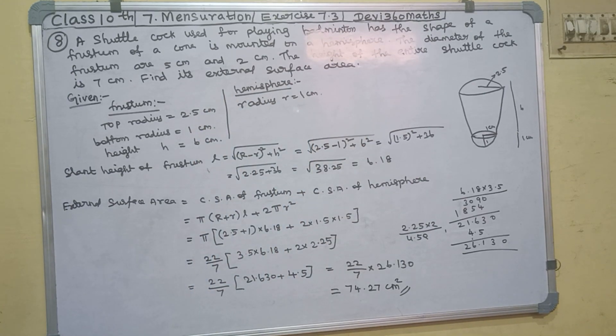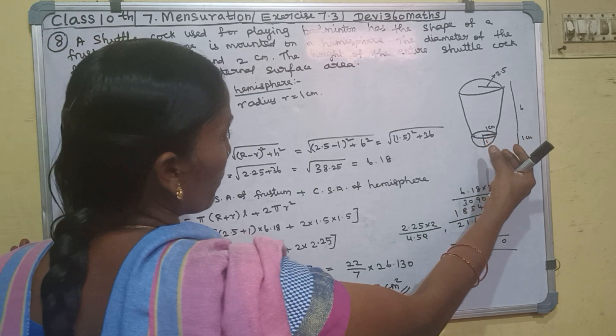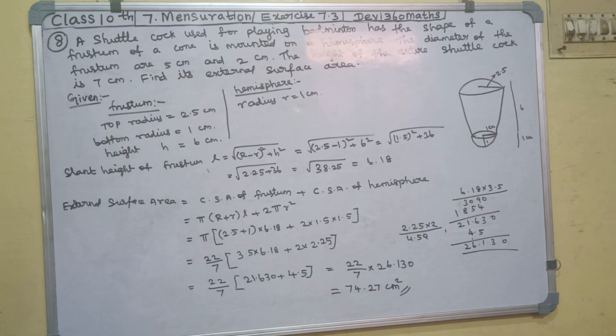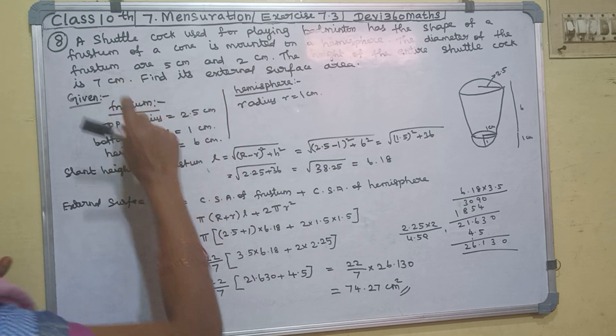That is, badminton shuttlecock use. That is how it is shaped. The hemisphere is at the base and a frustum is on top. The frustum has a top radius and a bottom radius. This is the hemisphere and its radius.